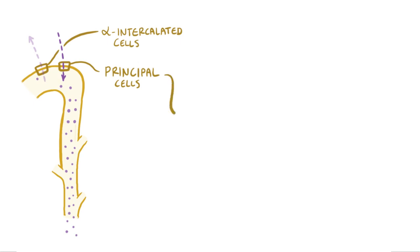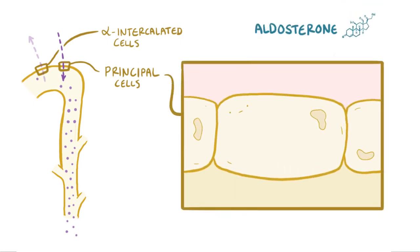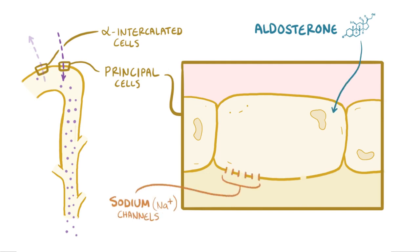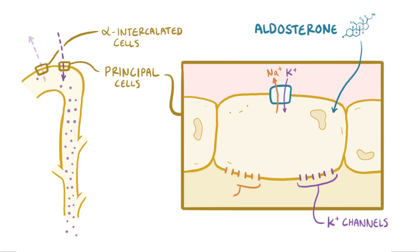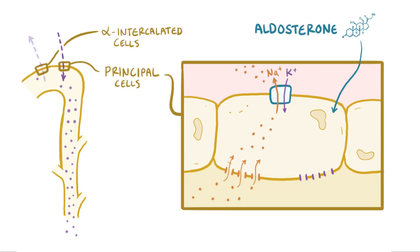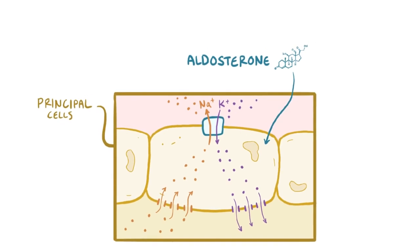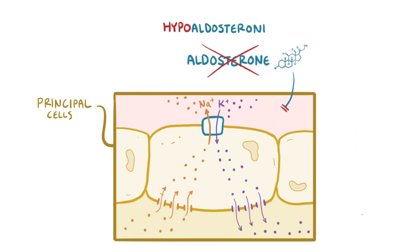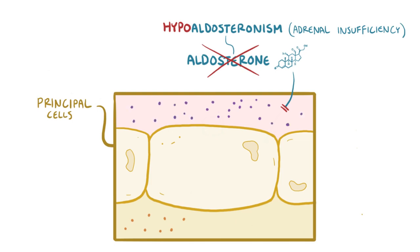An important hormone that helps regulate potassium reabsorption or secretion in the kidneys is aldosterone. Aldosterone increases the number of sodium channels and potassium channels on the lumen side of the principal cell, as well as sodium-potassium pumps on the basolateral side, allowing sodium to move from the tubule into the cell and then get pumped into the blood. As more sodium moves into the blood under aldosterone's influence, more potassium gets pumped into the cell, raising intracellular potassium concentration and promoting potassium secretion. In situations where someone cannot produce enough aldosterone — hypoaldosteronism, also known as adrenal insufficiency — there is less potassium secretion and therefore more potassium retained, leading to hyperkalemia.